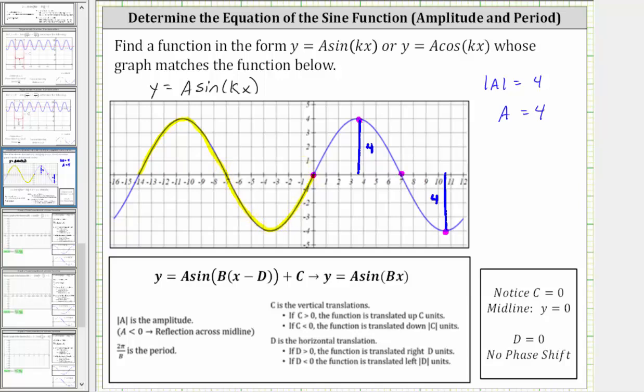We have a complete graph of the sine function starting at x equals negative 14, going back to x equals zero. Because this distance is 14 units, the period is 14 units, and therefore two pi divided by k must equal 14.